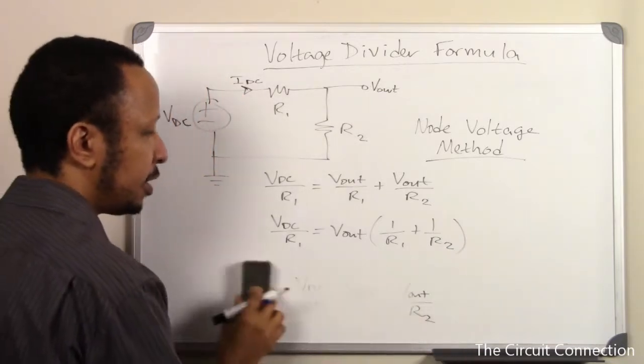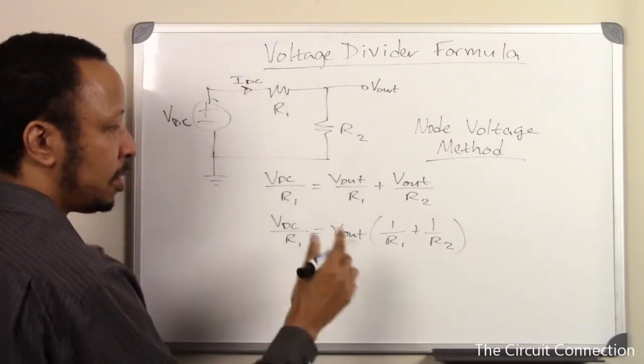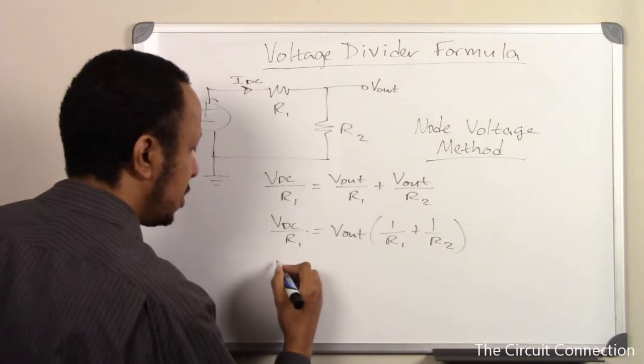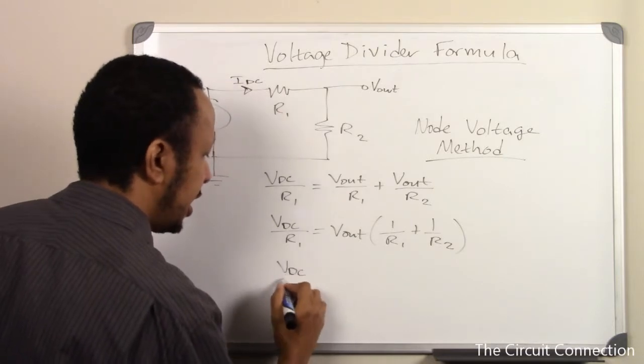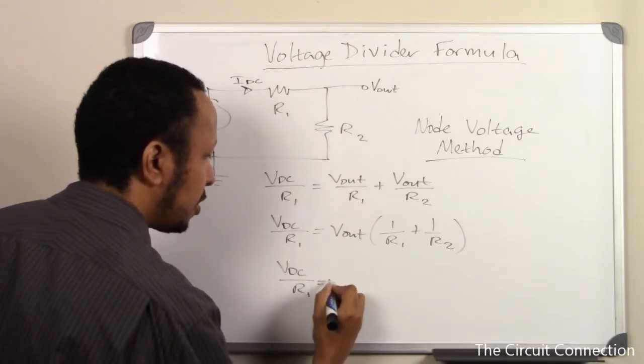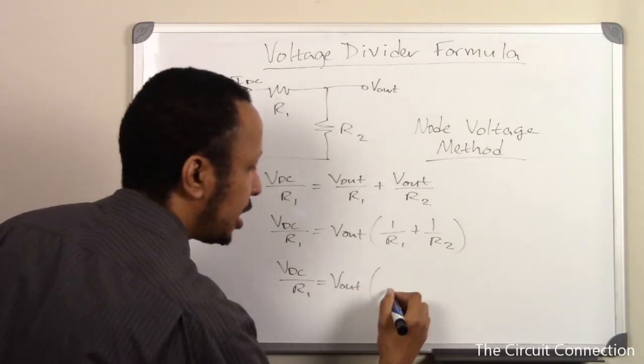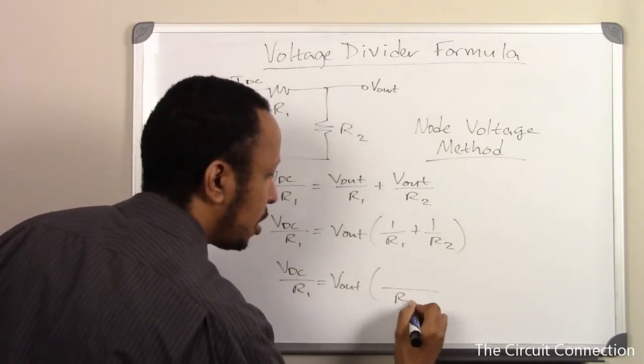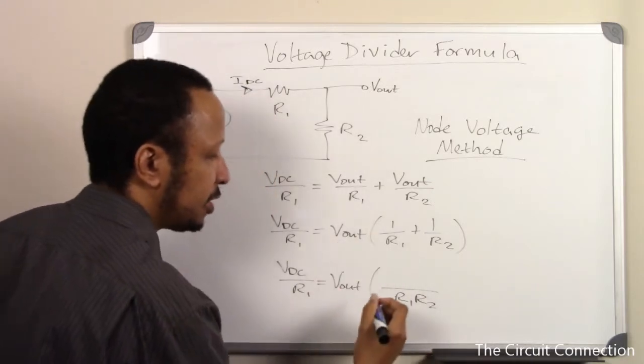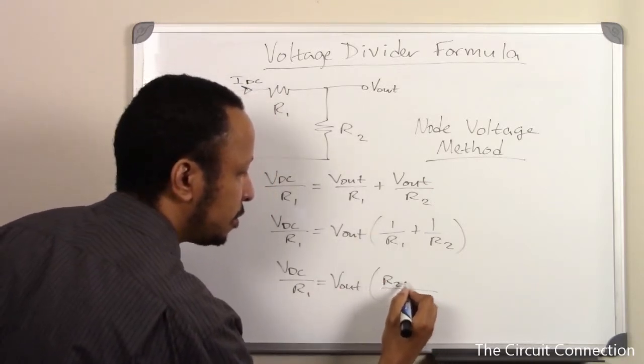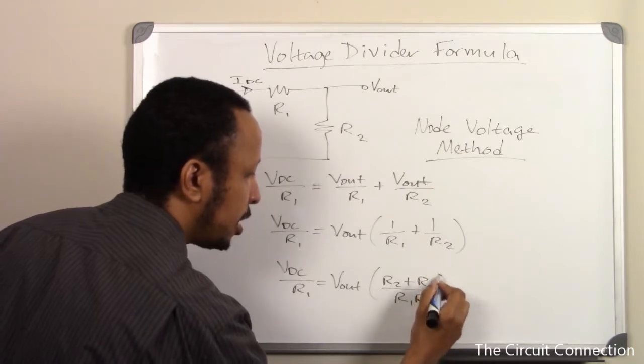Next we're going to add 1 over R1 plus 1 over R2 together. We're going to need to have a common denominator to do that. And the common denominator is going to be R1 times R2, and then of course on the top that's going to give us R2 plus R1.